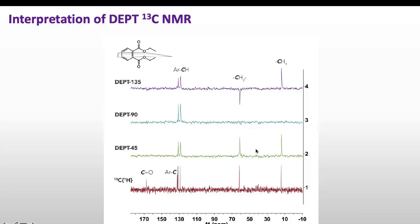The remaining two peaks must belong to CH₃ or CH₂, but we are not yet sure which is which. Taking DEPT 135, we see one peak below the baseline and one peak above the baseline. Since above the baseline corresponds to CH or CH₃ and below the baseline corresponds to CH₂, we can assign these peaks accordingly. In this way, we find which peaks belong to quaternary, CH₂, CH₃, and CH carbons, getting the information about protons attached to carbons that we were missing in proton-decoupled carbon NMR.